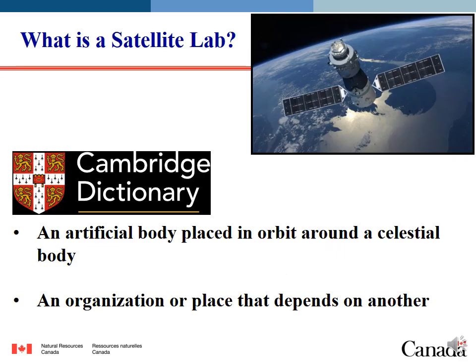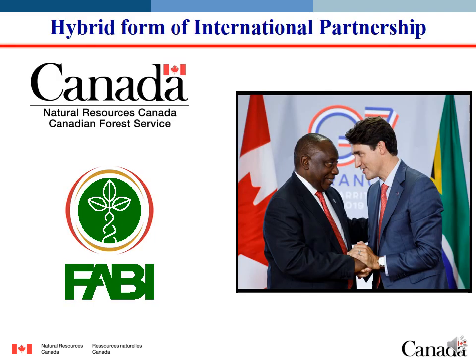For many of us when we hear the term satellite we might think about an artificial body placed in orbit around a celestial body, but an alternate definition is an organization or place that depends on another. Using this definition, we could define a satellite lab as one that depends on the existence of another lab. In this sense, satellite labs are a hybrid form of international partnership — smaller, more focused, and less bureaucratic than a formal alliance between institutions, but broader and more structured than an agreement between like-minded individuals, as shown here on the right.